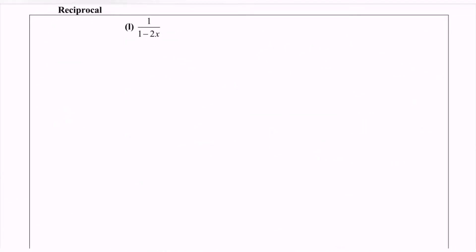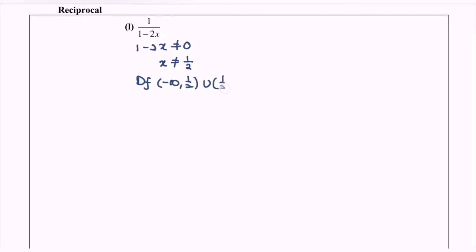Step number one is to find the domain. As we all know, for the denominator, we are not allowed to equate to 0. So for this case, 1 minus 2x cannot be equal to 0, so x cannot be equal to 1 over 2. So x cannot be equal to 1 over 2, meaning it is an asymptote, so x will be equal to 1 over 2.